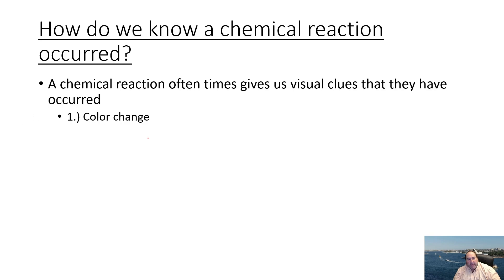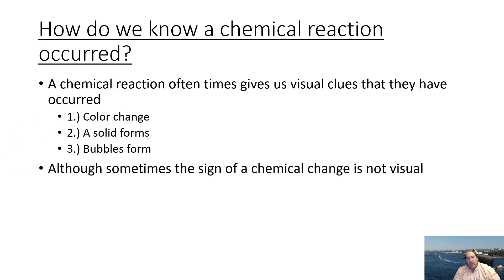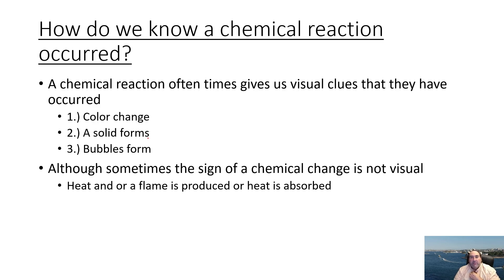A chemical equation is really a representation of a chemical reaction. Remember that a chemical reaction is a chemical change, and when we do have a chemical change, what we start with and what we end with are fundamentally different things — there has been some type of change that has occurred. That is why it's referred to as a chemical change and a chemical reaction.